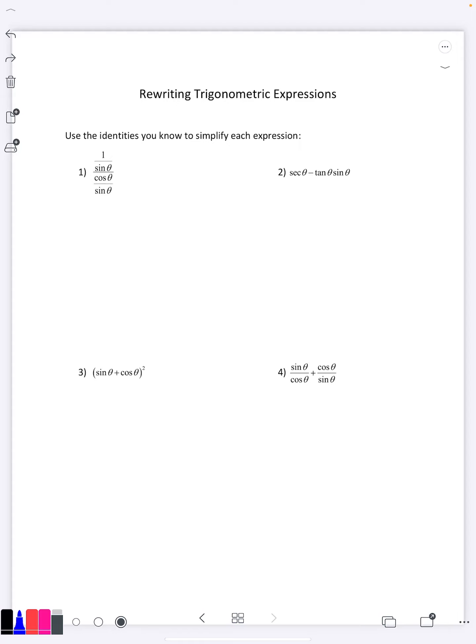So the first example here we have a complex fraction, a fraction divided by a fraction. We know we can write that as the top fraction multiplied by the reciprocal of the bottom fraction, and then we see the sine thetas will cancel out.